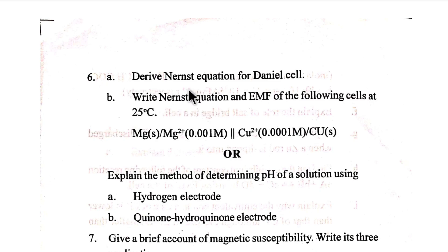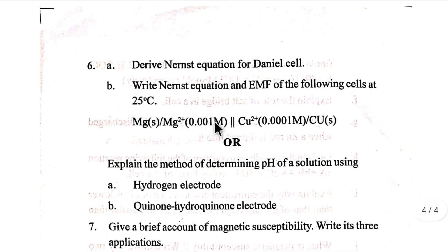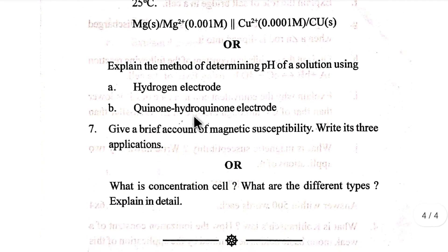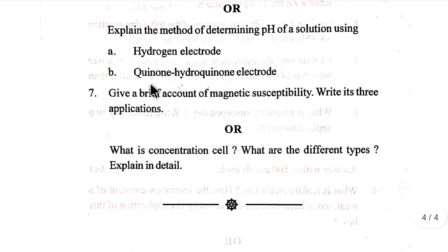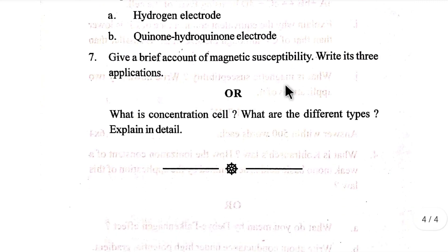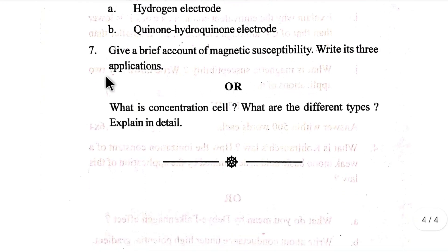Derive the Nernst equation for Daniel's cell. Write the Nernst equation and find the EMF of the following cell at 25 degrees Celsius. Explain the method of determining pH of a solution using the hydrogen electrode and the hydroquinone electrode.